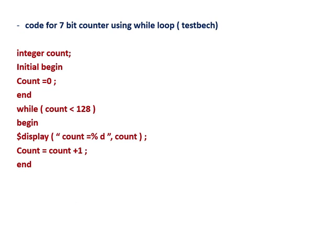This is a code for a 7-bit counter using while loop. Integer count, initial begin, count equal to zero — so count is initialized to zero. Then while count less than 128, begin, dollar display — this is for input and output monitoring purposes — then count equal to count plus one. So it will count 0 to 127: 0, 1, 2, ... 127.